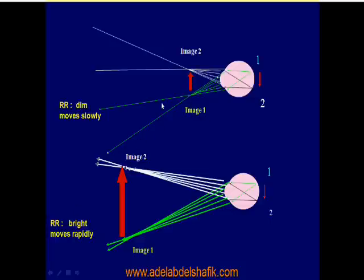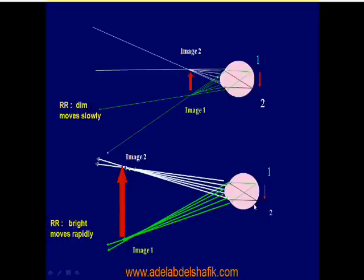Regarding brightness: in high myopia, the focus is far from the observer. Rays converge at the far point then diverge widely, so only part of the ray bundle enters the observer's pupil and the red reflex appears dim. In low errors, the focus is close to the observer and rays are just beginning to diverge, so the observer's pupil captures most of the bundle and the red reflex appears bright. In high errors: slow and dim. In small errors: bright and rapid.